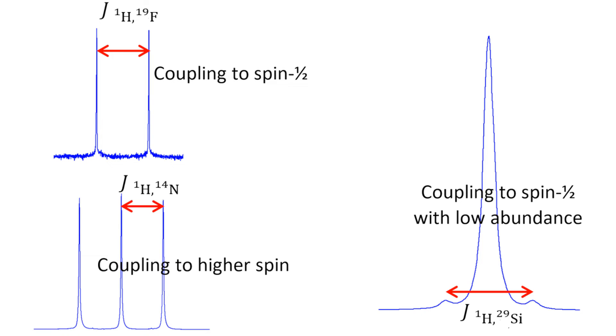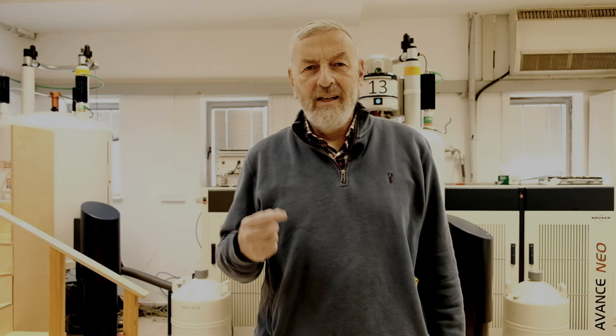Many nuclei have spin greater than half. One of these nuclei will split a proton signal into more than two peaks. For example, nitrogen-14 is spin-1 at near 100% abundance and splits a proton signal into three.